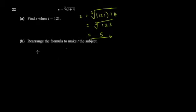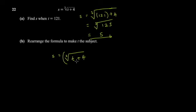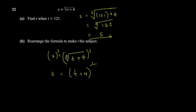Part B asks you to rearrange the formula to make t the subject. You have s = cube root of (t + 4). To remove a cube root, you cube both sides. If you're unsure, recall that cube root means to the power of one-third.